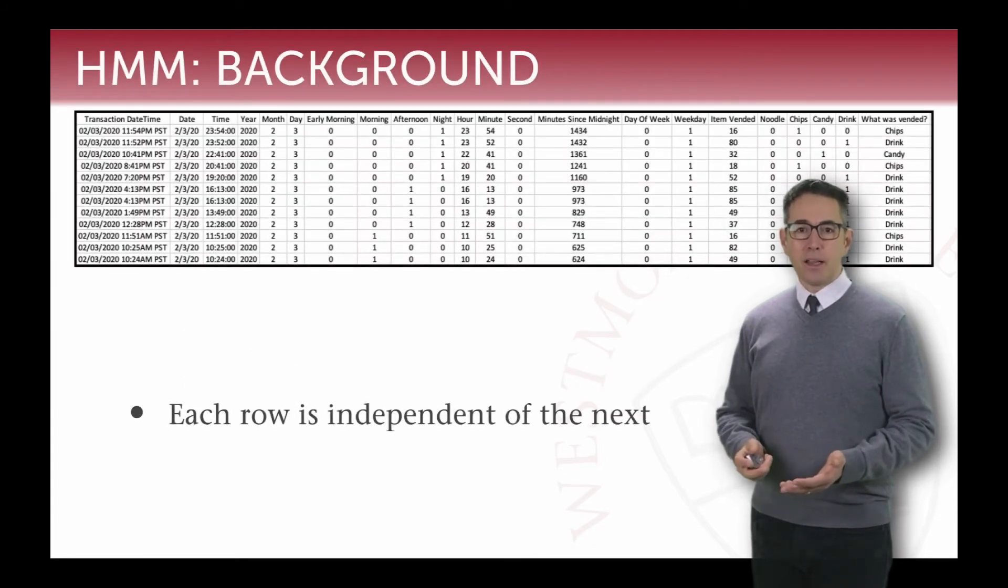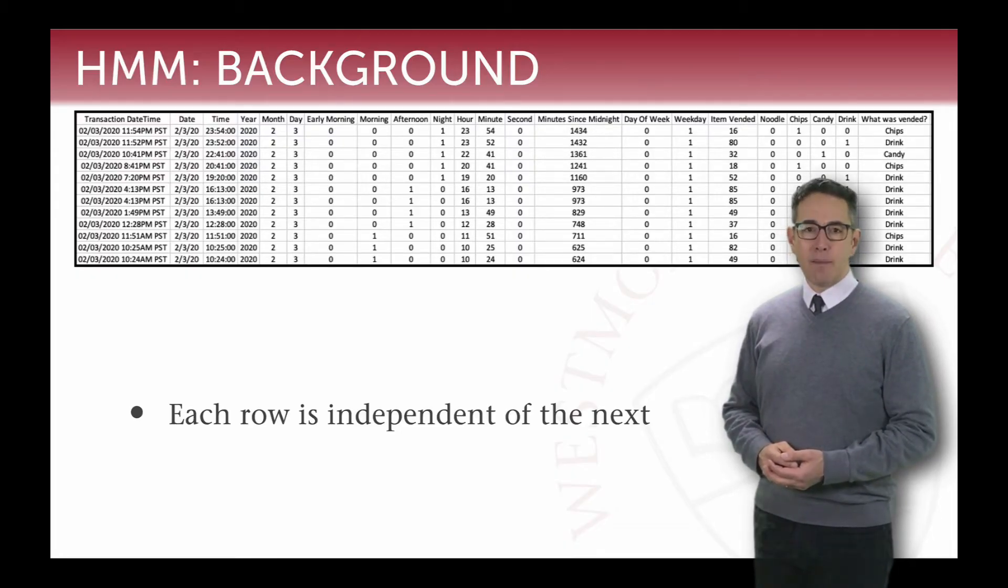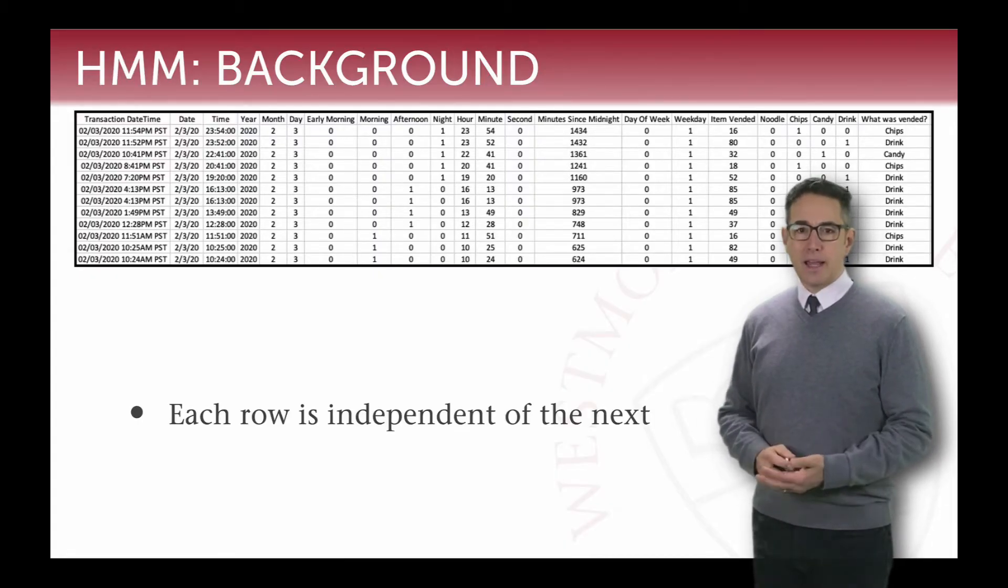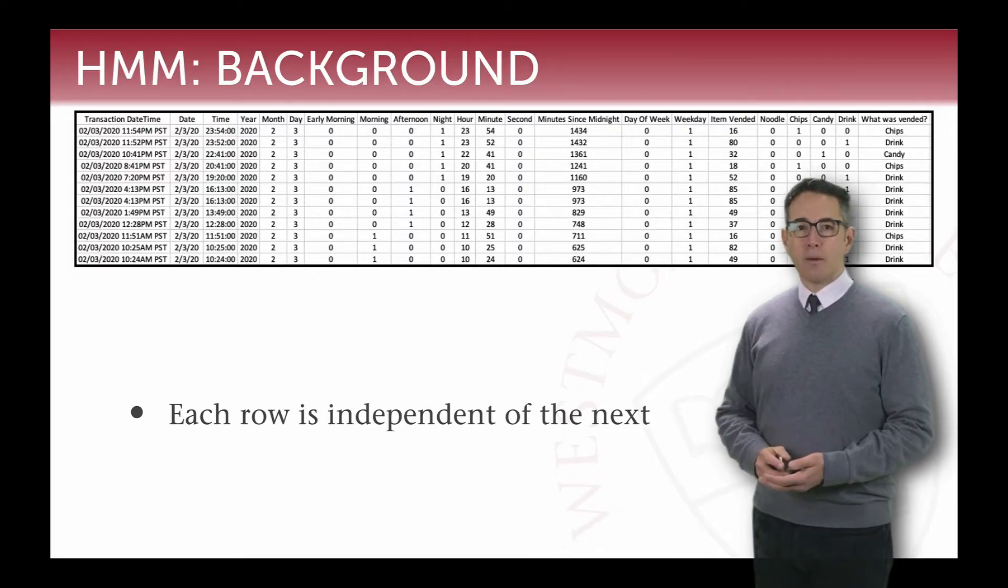So for example, in class we looked at data from the vending machine and we knew that we had information about what time different sales were made and we had a category about what was being sold: chips, drinks, or candy. And the goal was to try and take that row of data that was on the left and come up with some way of predicting what that column on the right was based on the data on the left.